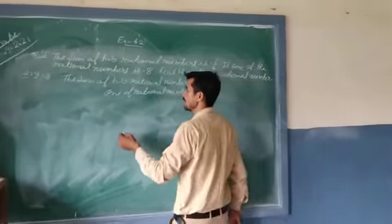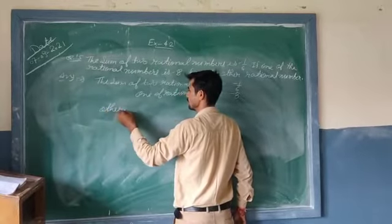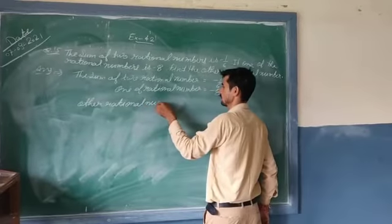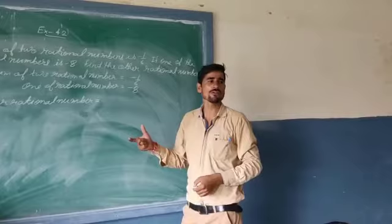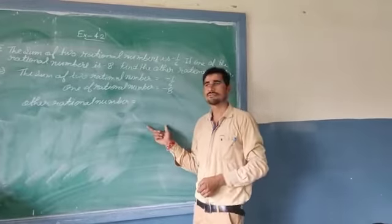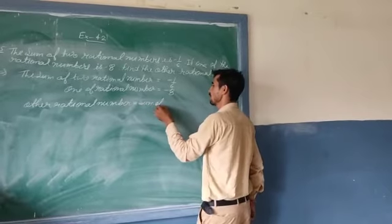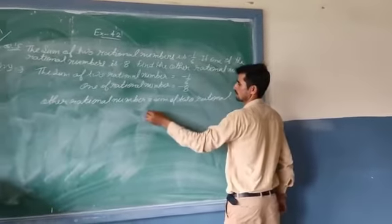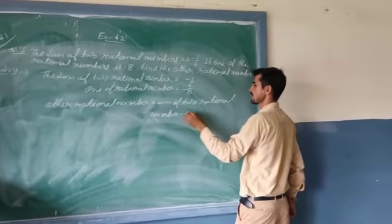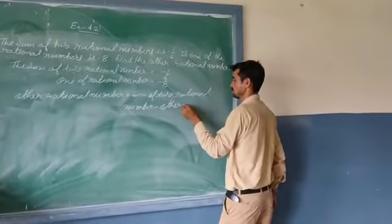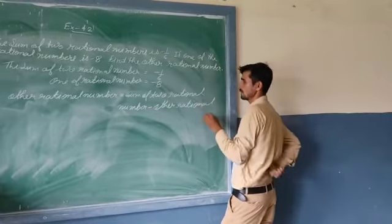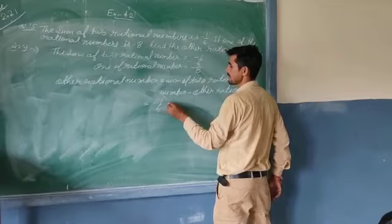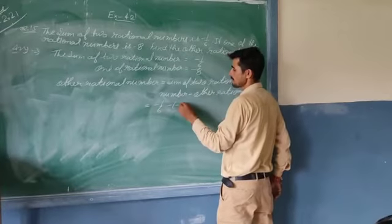To find the other rational number, the formula is: other rational number equals sum of two rational numbers minus one rational number. Sum of two rational numbers minus one upon six, other rational number minus minus eight.